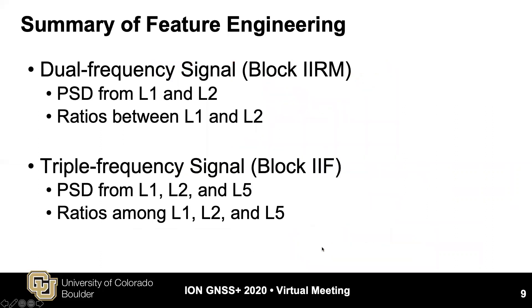This slide summarizes the feature engineering given the available frequency bands. Our work focuses on detecting anomalies on signals from GPS block 2RM and block 2F satellites. Features of PSD can be obtained from each available frequency band. For the ratios, a dual frequency signal can only generate one ratio between L1 and L2, while a triple frequency signal can generate three ratios: L1 versus L2, L1 versus L5, and L2 versus L5. Triple frequency signals offer additional information, and a performance comparison between these two will be discussed later.